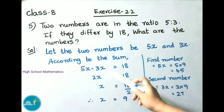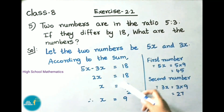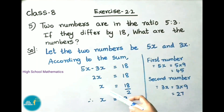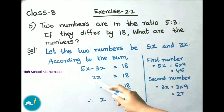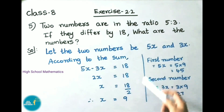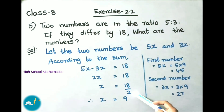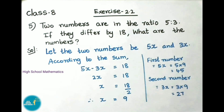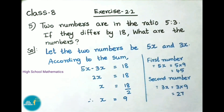5x minus 3x is 2x, that equals to 18. Next, x equals to 18 by 2. Here 2 is going to multiply; on transposing it becomes divided by. So x equals to 18 by 2. 2 times 9 is 18. Therefore x value is 9.